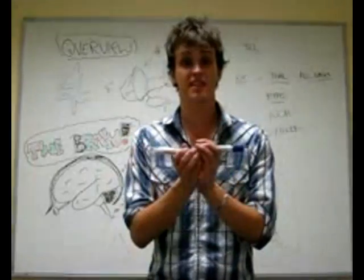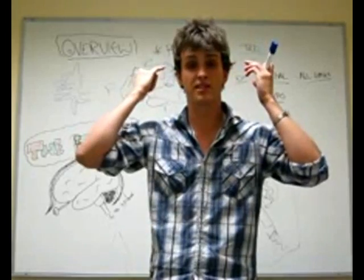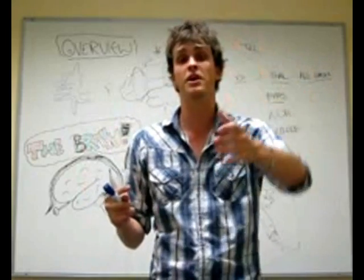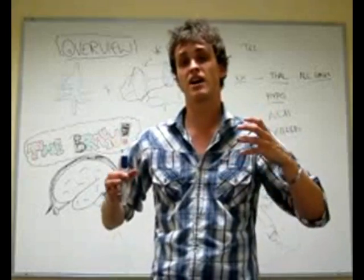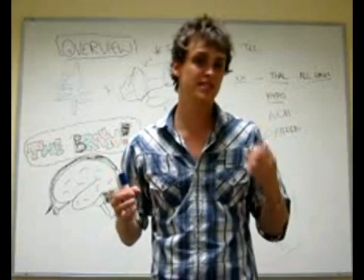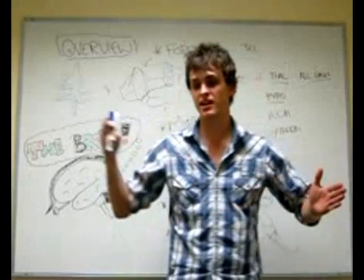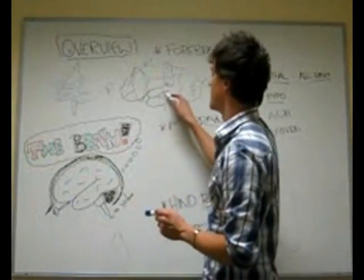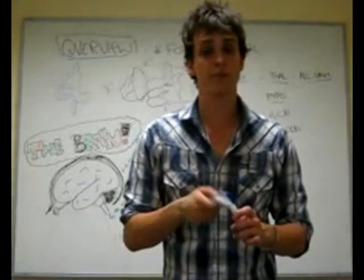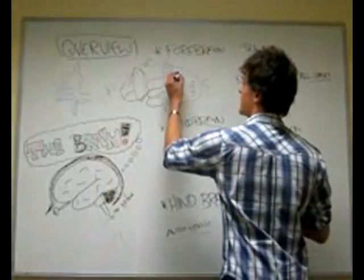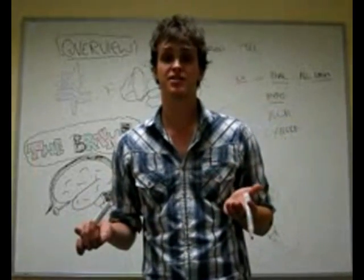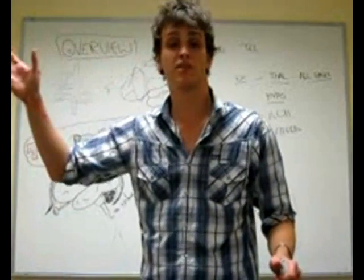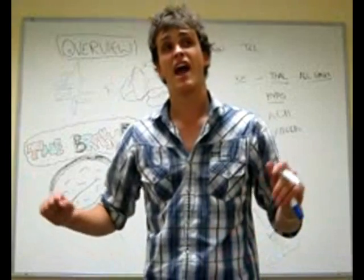The temporal region generally deals with sound. Because it is close to the ears, signals go directly there. There is a tonotopic map — similar to the retinotopic map — but instead of a picture, each stimulus is represented as a sound: high-pitched sounds here, low-pitched sounds there, each stimulus in a different section. There is also a region called the POT — parietal, occipital, and temporal — which is responsible for the integration of all the senses.